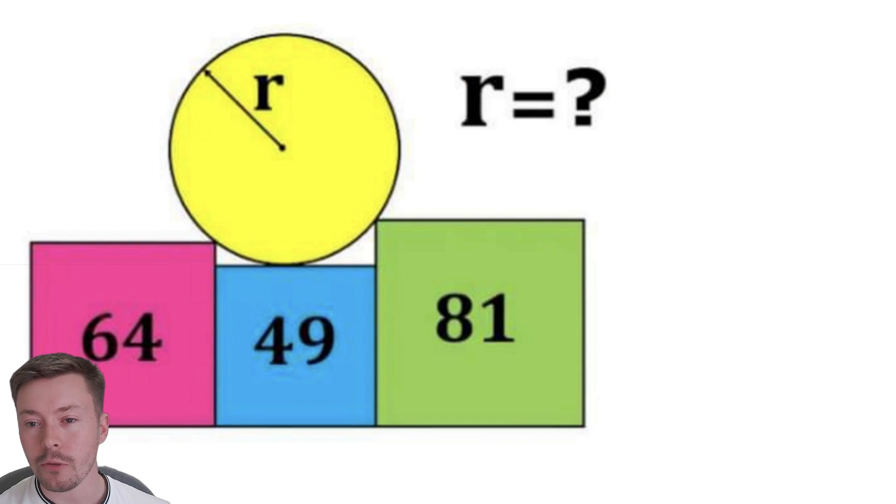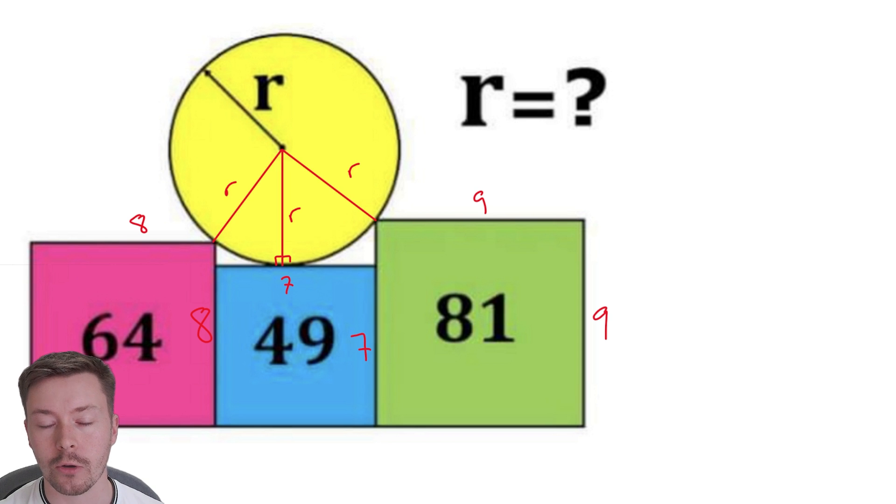So the first thing that I wanted to do quite naturally is to put the side lengths on these squares because they're all squares. The square numbers, as I said just a second ago, they're going to be nice numbers. So I'll put the 7, the 8 and the 9 on there. And whenever you've got a circle, you will want to draw the radii on the circle to key points. So I've drawn them to the top left and the top right of the squares and the top of the middle square, that blue one.